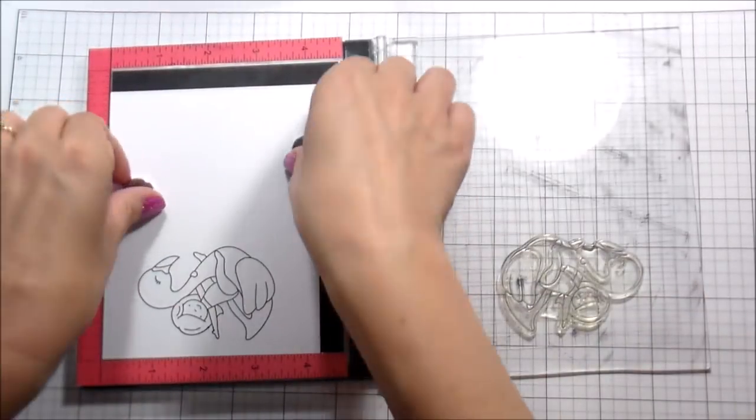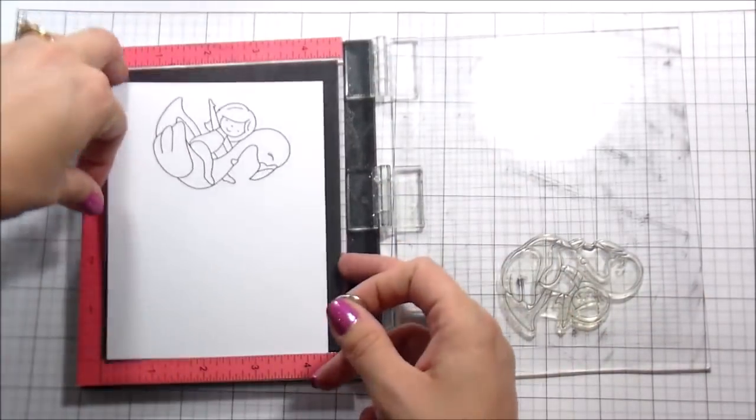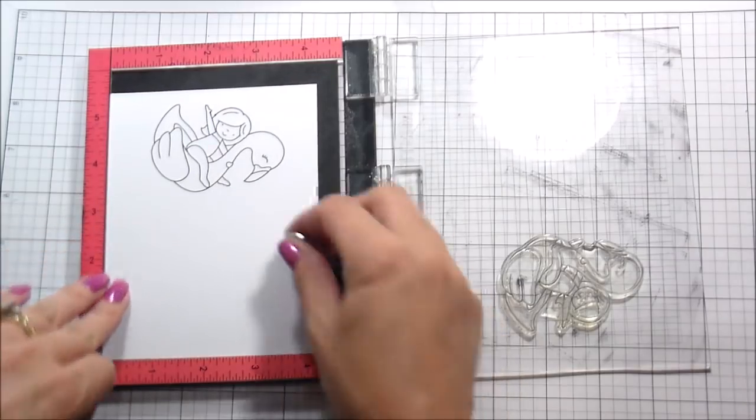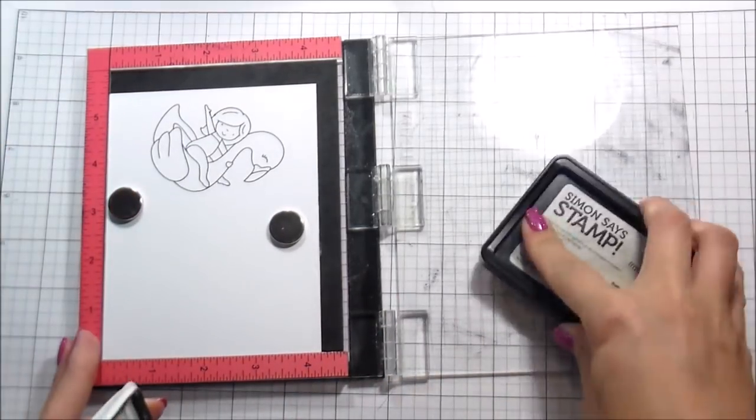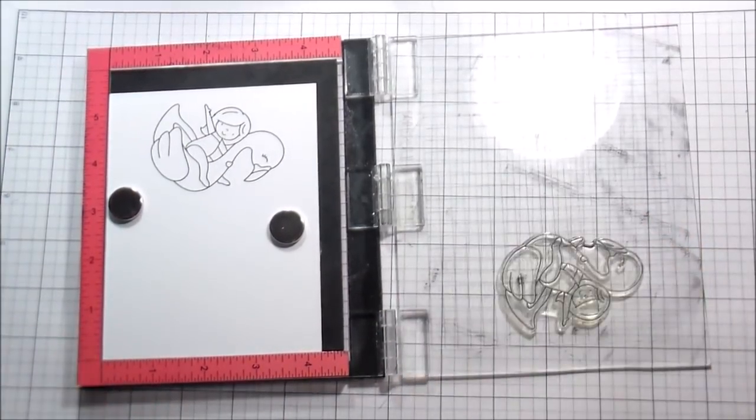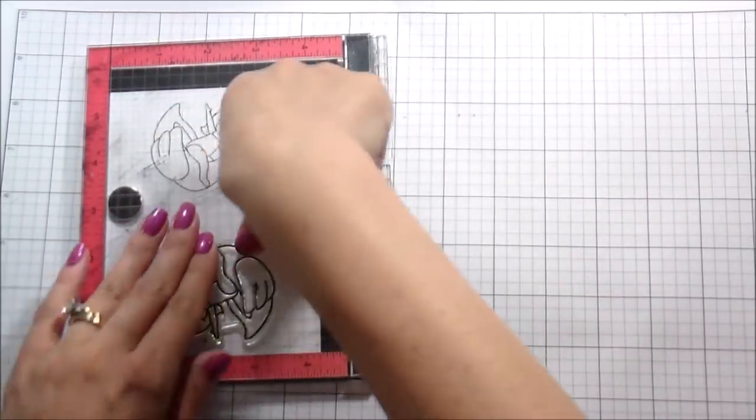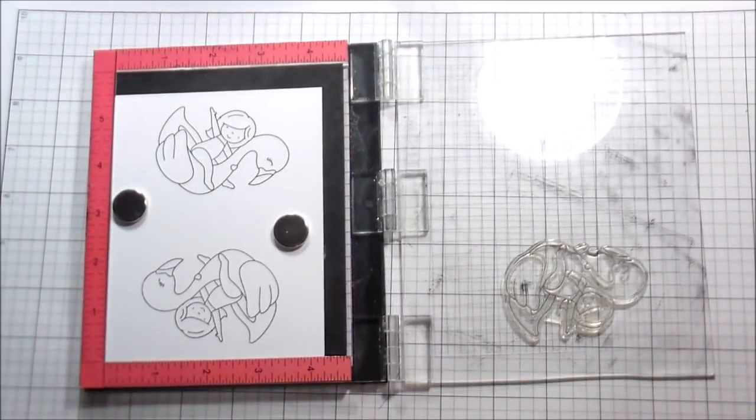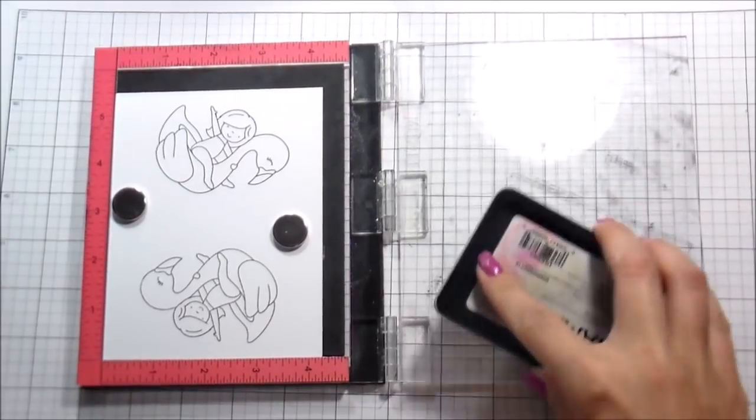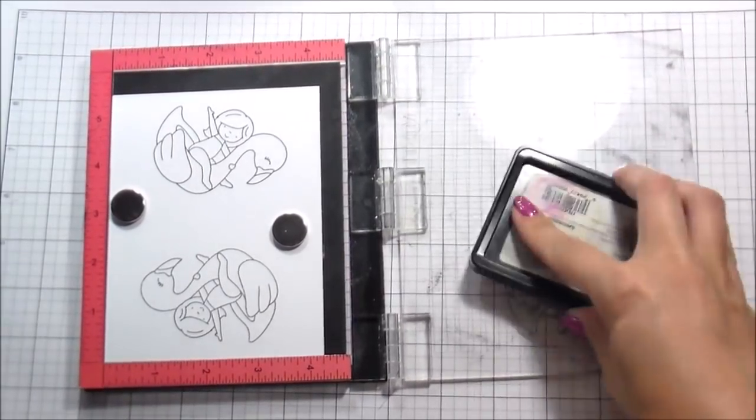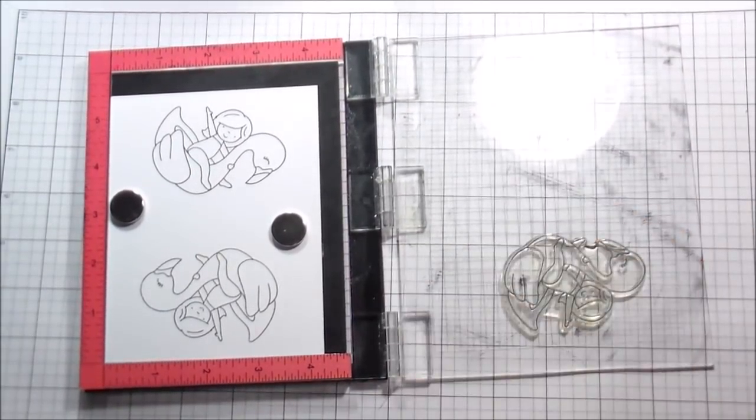I stamped each one of these down twice and I positioned it so that all I would have to do is turn my paper because I'm pretty lazy and I didn't want to have to clean the stamp and move it around and all that. So while one's going to be upside down from the other, it doesn't really matter because ultimately I'm going to be cutting them out.